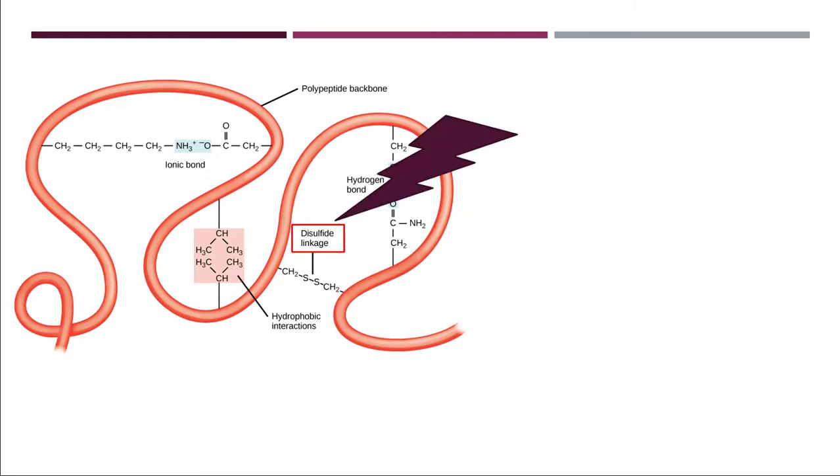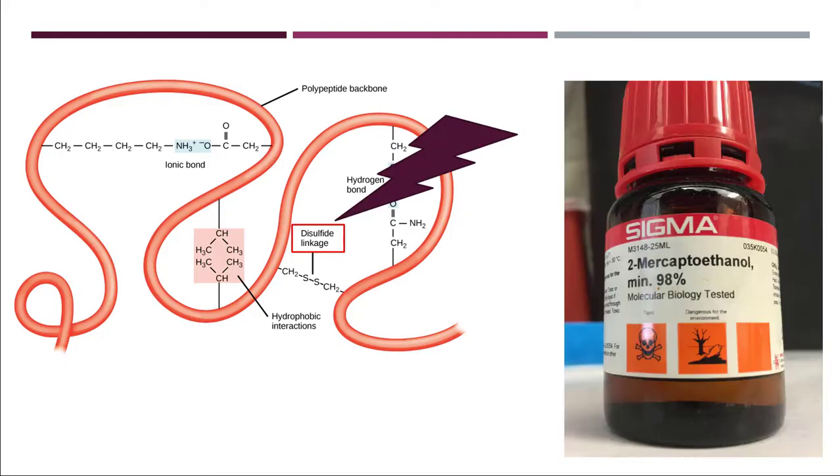So we need to break this bond. For that, we will add 2-mercaptoethanol in the solution. The function of this 2-mercaptoethanol is to break the disulfide linkage bond present between the protein sample and make it in a primary polypeptide chain.